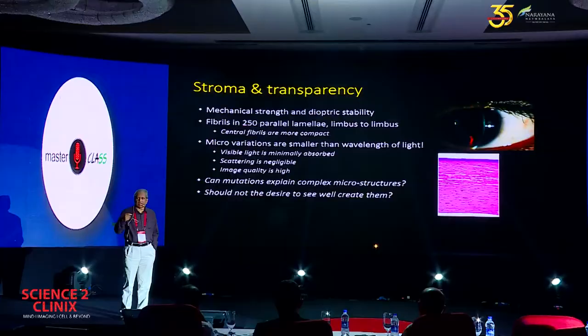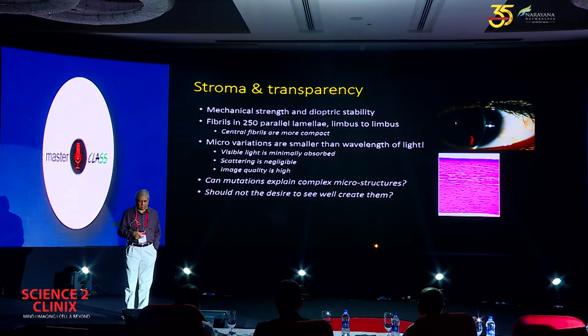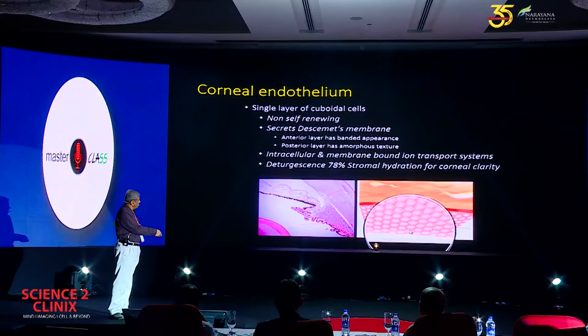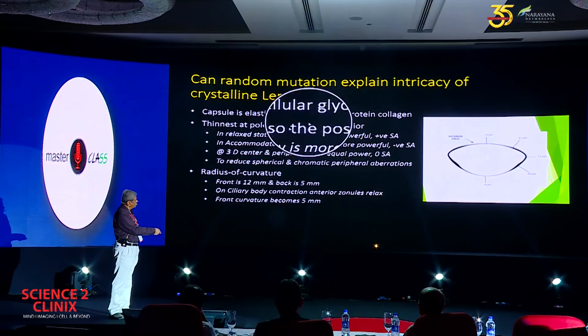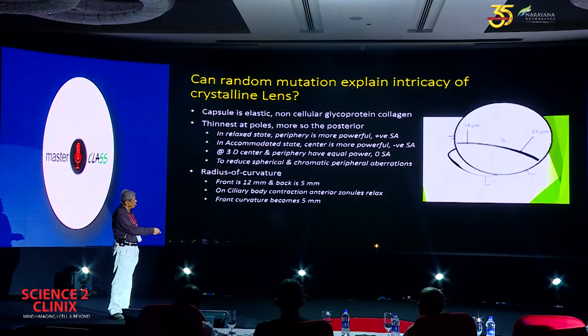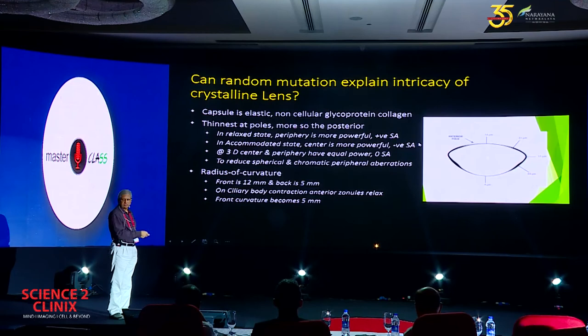The stroma has functions very similar to very clean glass — how did that happen in a living being? Evolution says you will have to understand the wavelength of light: the particles inside the stroma are smaller than the wavelength, so visible light is minimally absorbed, scattering is negligible, and image quality is very high in the cornea. The same applies to corneal endothelium — it is a very complex organ, and endothelium has to function in such a way that it keeps the hydration of the cornea around 78%. The lens capsule is very thin in front and back — in a relaxed state it is an oblate lens, and in a contracted accommodative state it is a prolate lens, so at three diopters of accommodation it has equal power with zero spherical aberration. How did all this happen? Because there was a need.